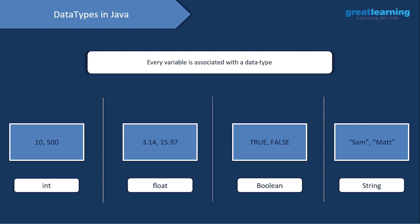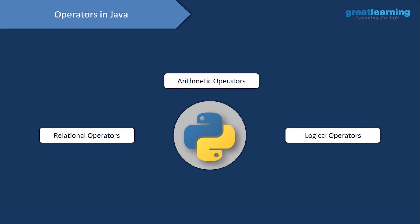Now we'll see the operators in Java. We have arithmetic operators, relational operators, and logical operators — three types of operators in Java.